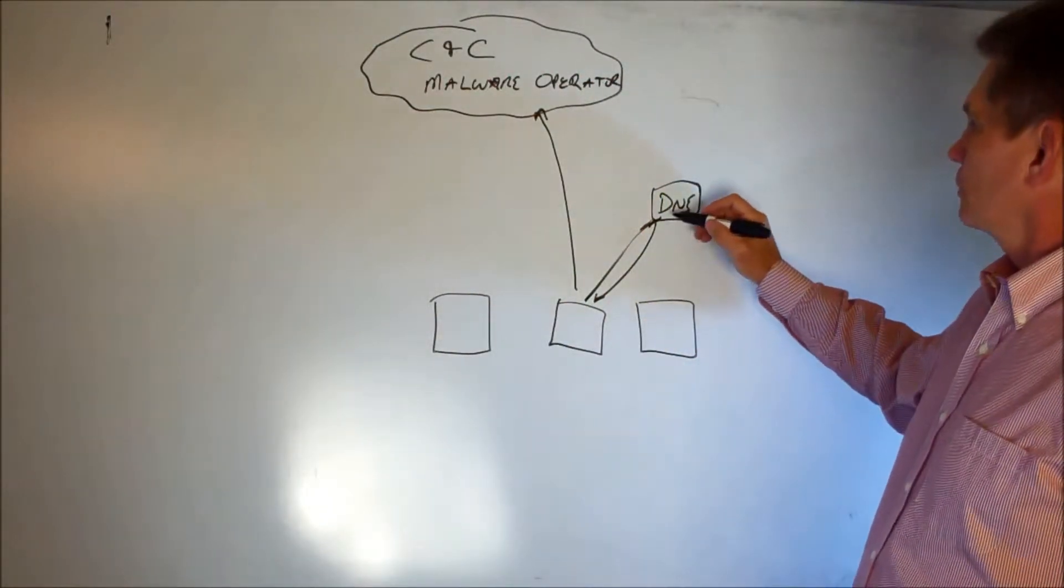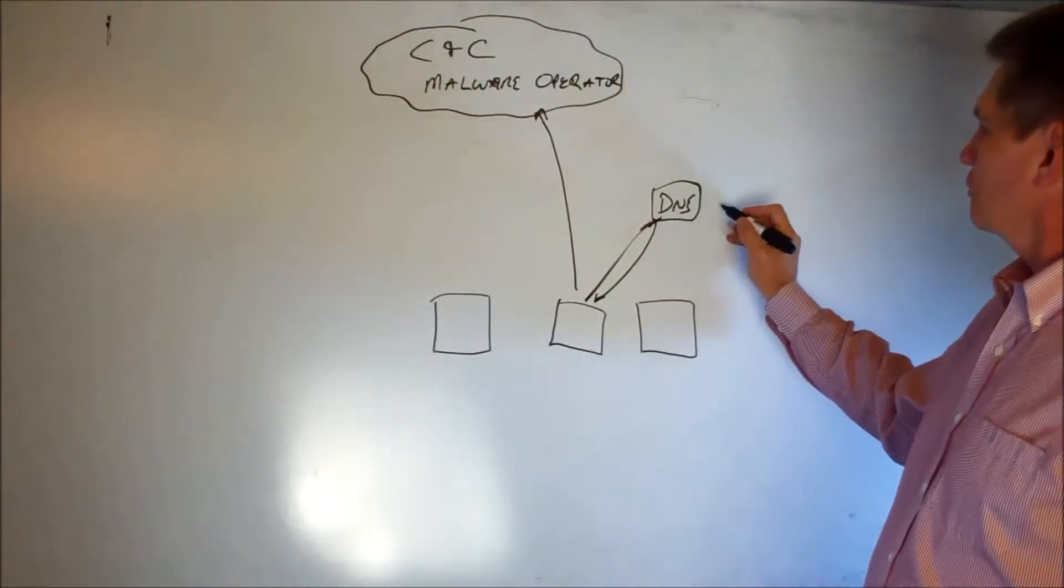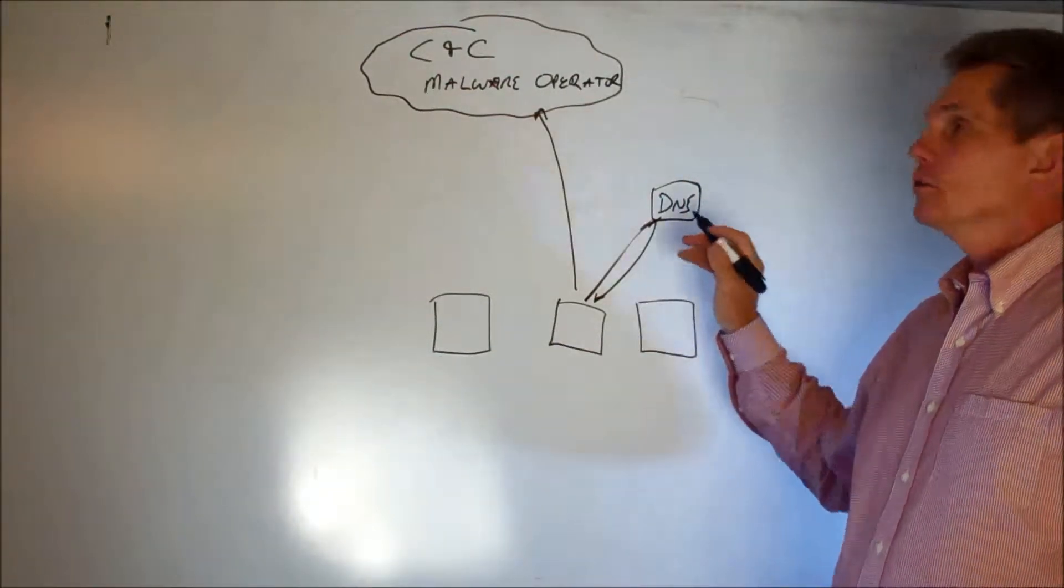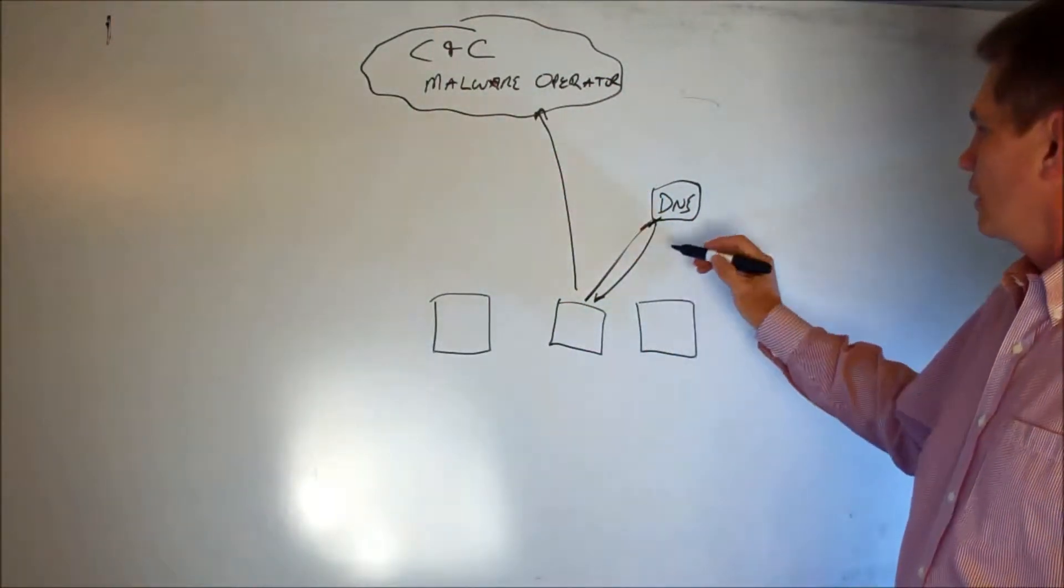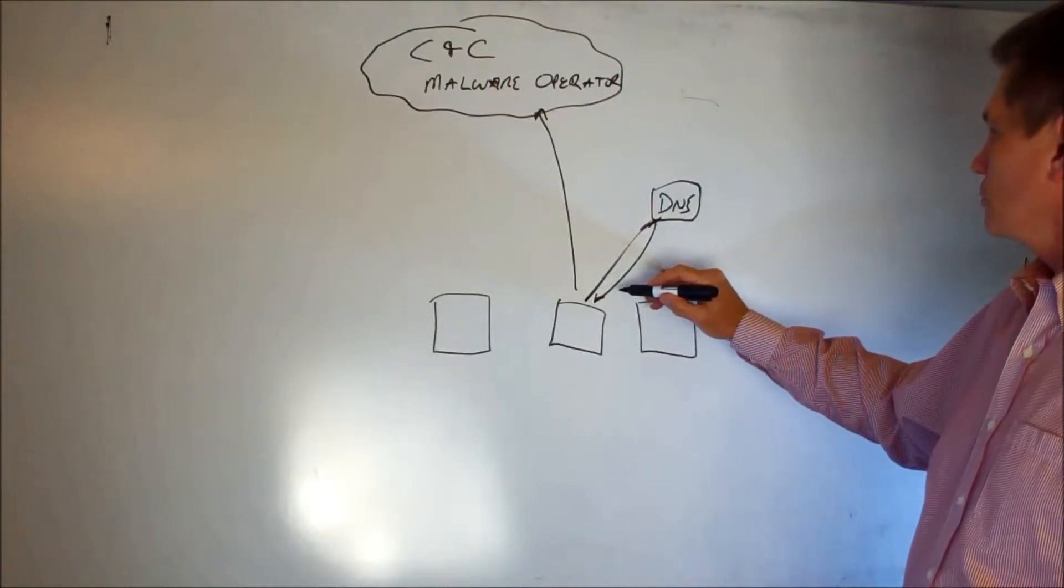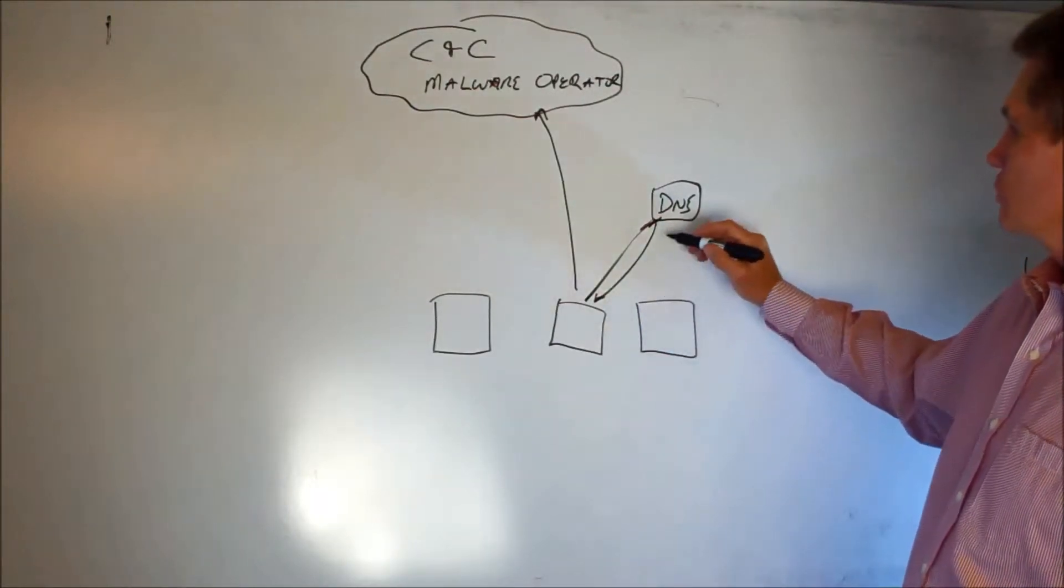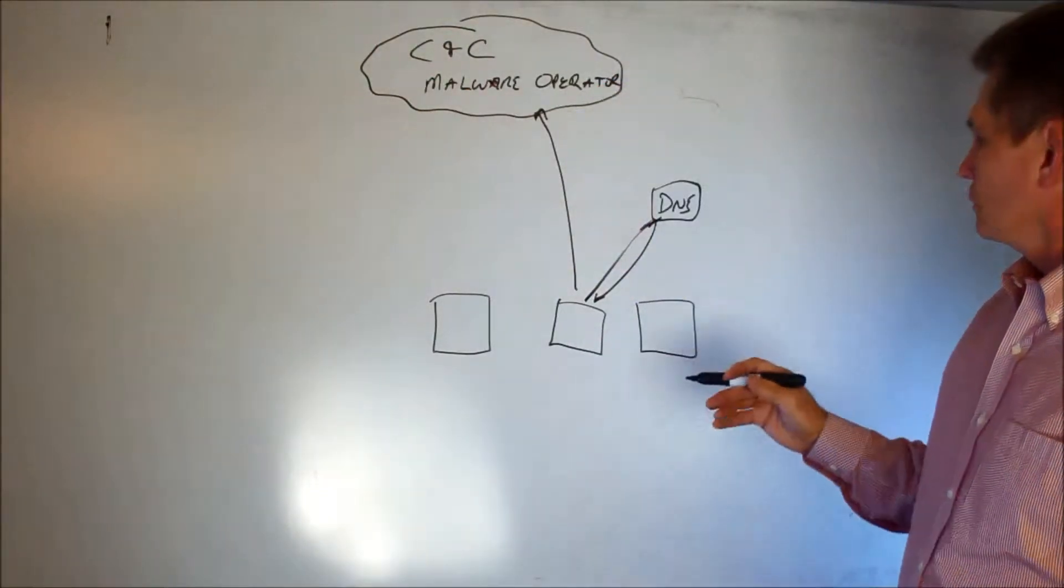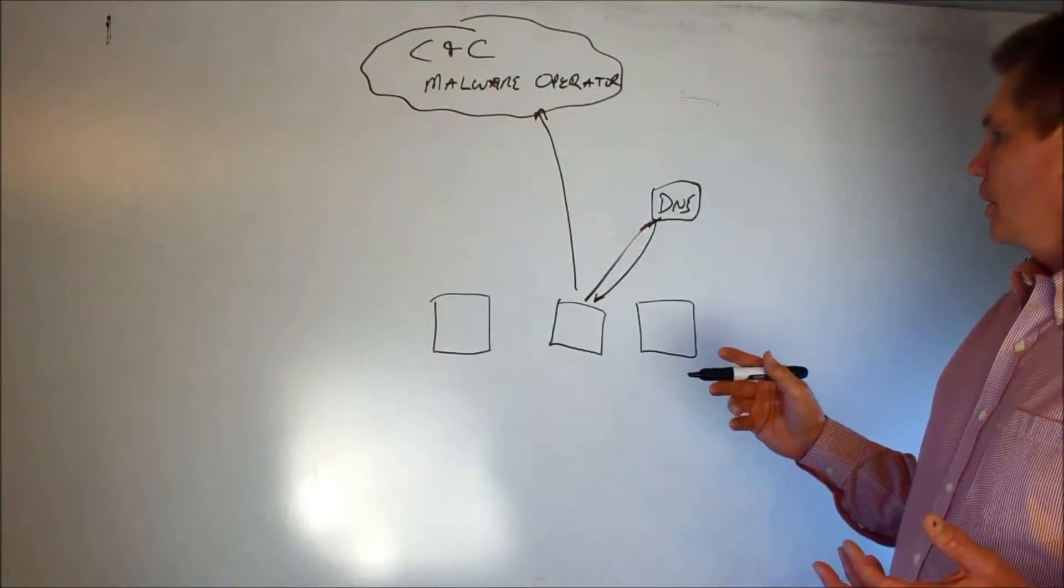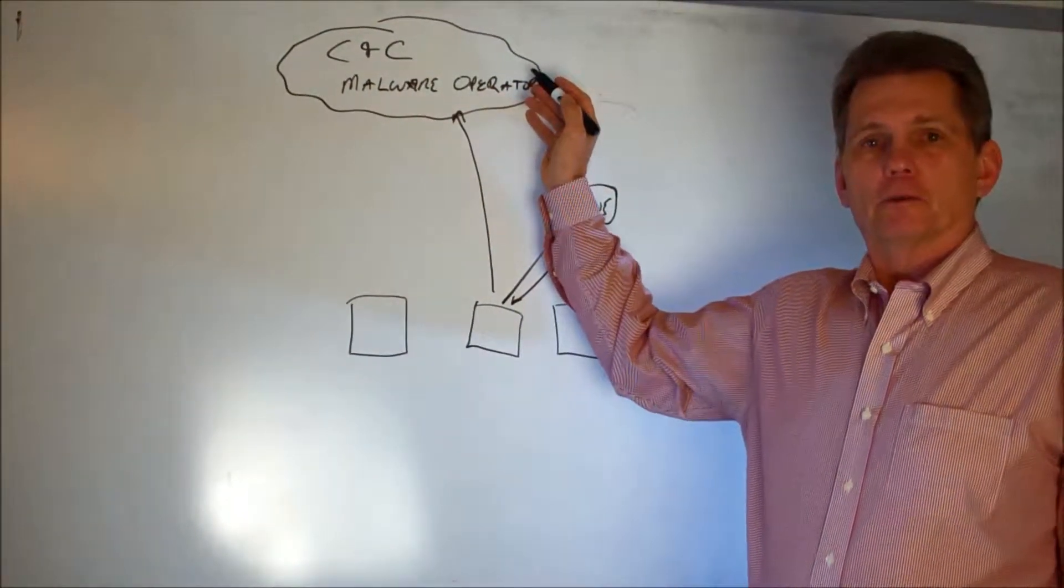They went through a period of time where there was fast fluxing or IP fluxing, where they would have a list of IP addresses here to help hide this area because they'd use a large number of IP addresses. And they've also used something known as domain generation algorithms, or DGA, to use a large list of domains to get back to a small list of IP addresses. So this has worked very well, but at the same time, they still have the centralized infrastructure that is susceptible to attack.